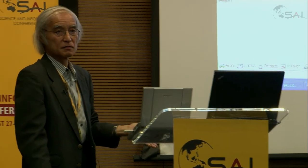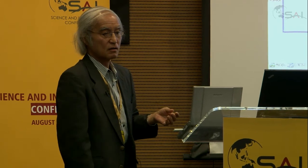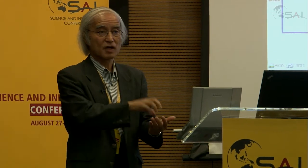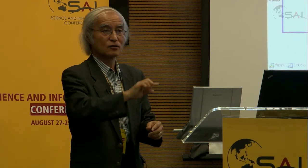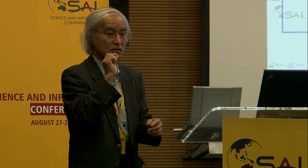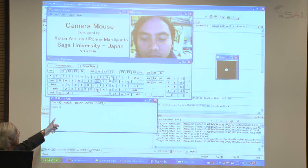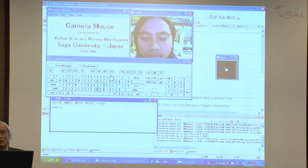Similarly, the line of sight can be used for controlling a mouse or cursor — this is called camera mouse. A camera acquires the user's face, extracts the eye, pupil, and corneal curvature, estimates the line of sight, and selects the cursor. The user is now typing 'Saga University' by eyes only.